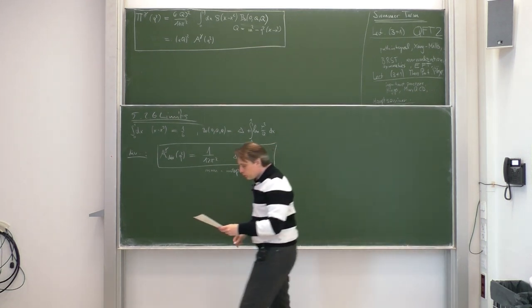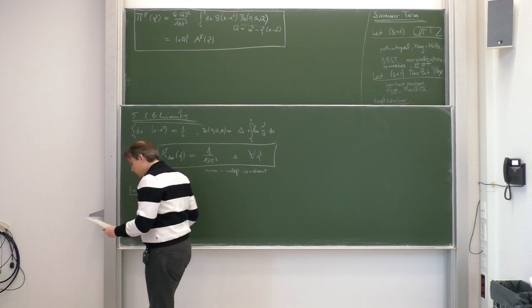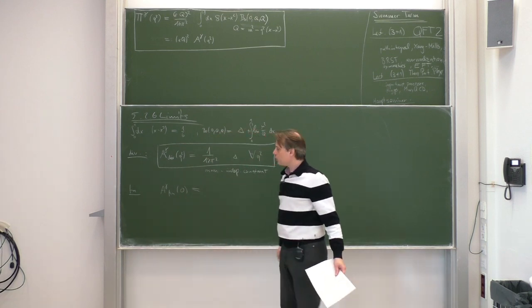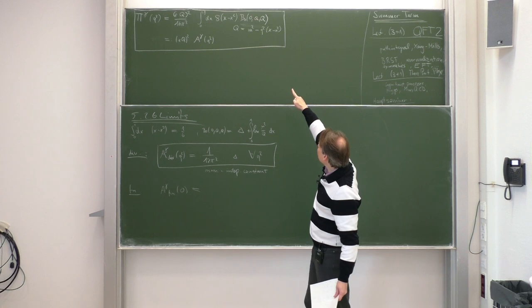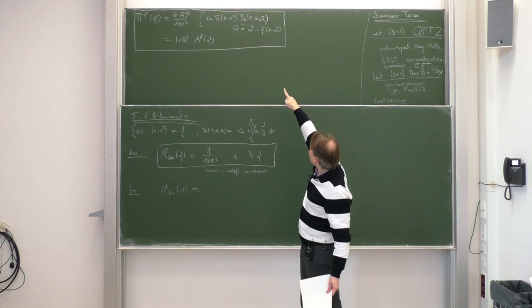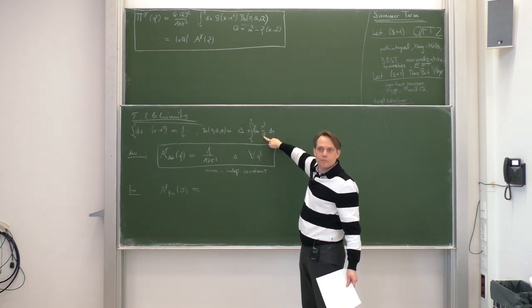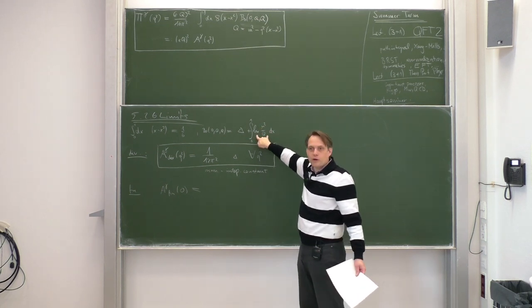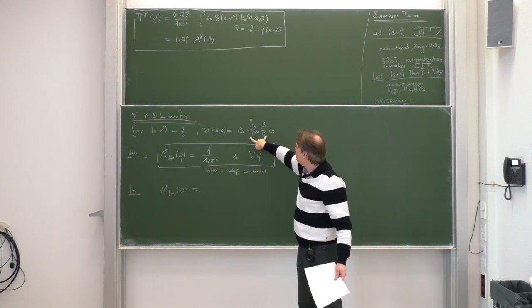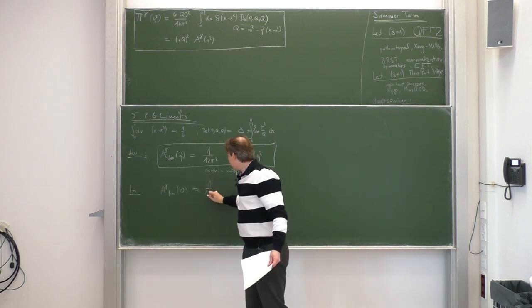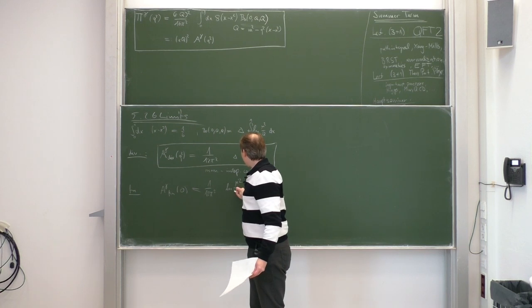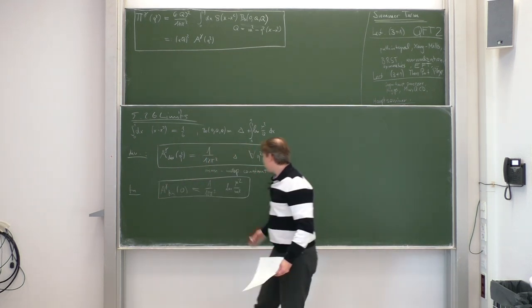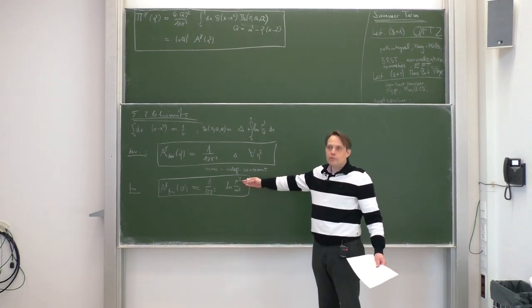Looking at the finite part, we first evaluate it at q squared equals zero. When q squared is zero, the big Q is just m squared, so the logarithm becomes ln(mu squared / m squared), which doesn't depend on x. The integral from 0 to 1 gives just the argument, so we get (1/12 pi squared) times ln(mu squared / m squared). This is a constant depending on the mass and the unphysical scale mu.